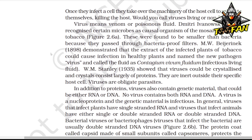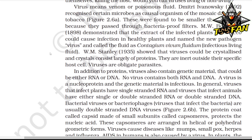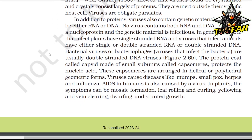In addition to protein, viruses also contain genetic material that could be either RNA or DNA — no virus contains both. A virus is a nucleoprotein, and the genetic material is infectious. Viruses that infect plants generally have single-stranded RNA; viruses that infect animals have either single or double-stranded RNA or double-stranded DNA. Bacterial viruses or bacteriophages are usually double-stranded DNA viruses. The protein coat called capsid, made up of small subunits called capsomeres, protects the nucleic material. Viruses cause diseases like mumps, smallpox, herpes, and influenza. AIDS in humans is also caused by a virus. In plants, symptoms can include mosaic formation, leaf rolling, curling, yellowing, vein clearing, dwarfing, and stunted growth.